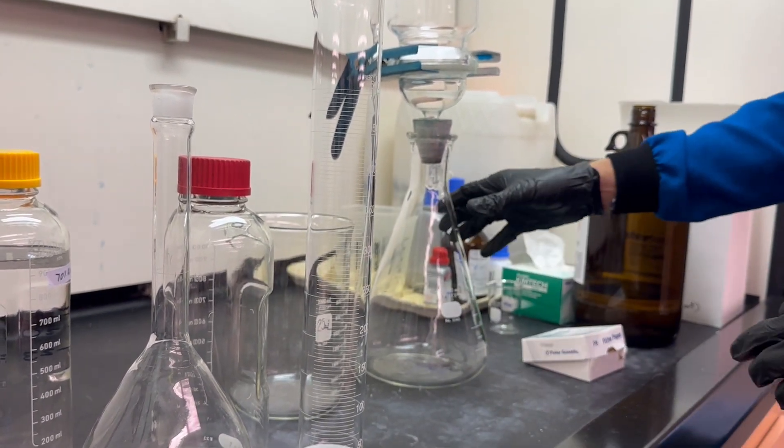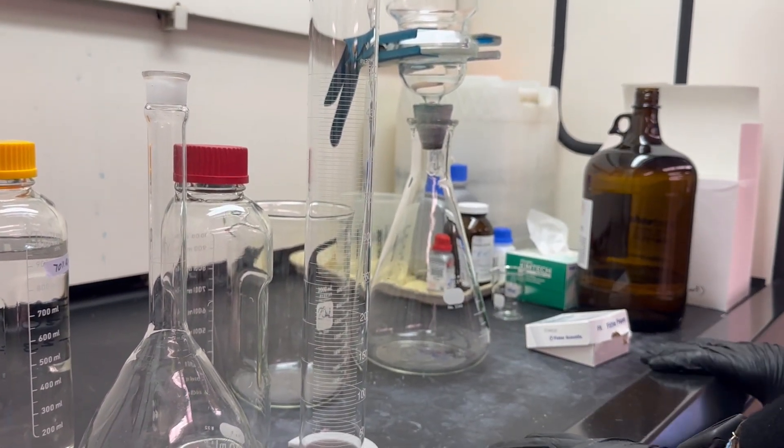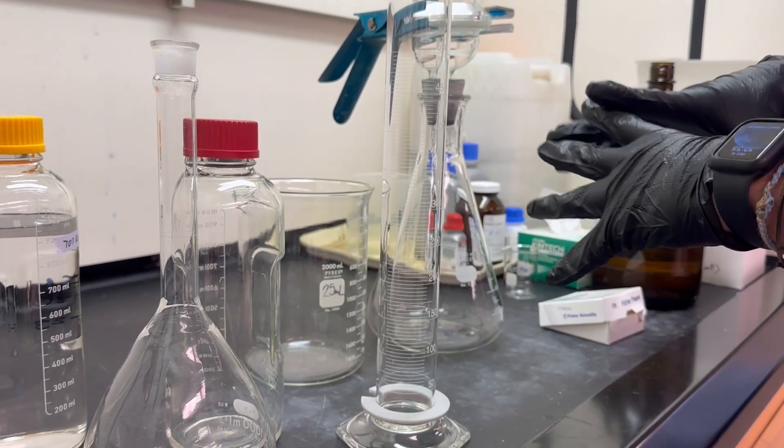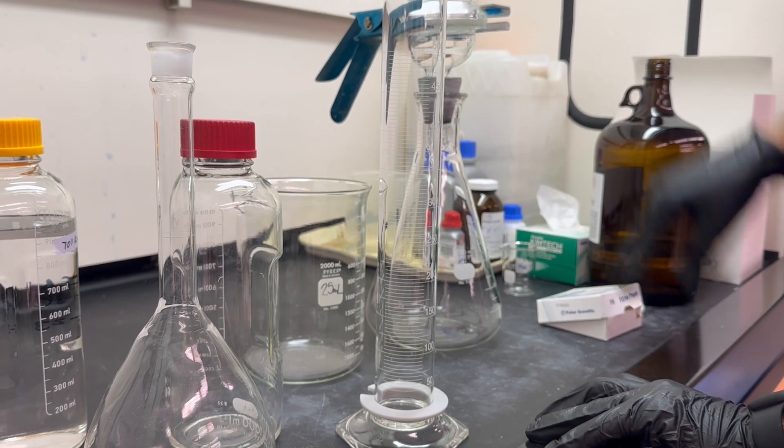To make a 70% ACN, 30% water solution, all we need is 700 mLs of acetonitrile and 300 mLs of water, add those together, mix for 20 minutes, vacuum filter.